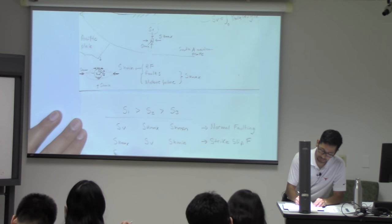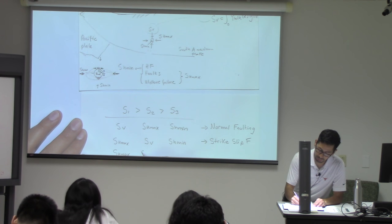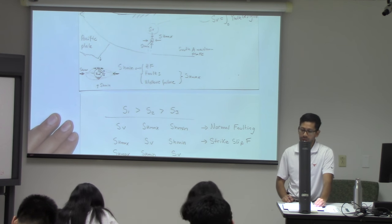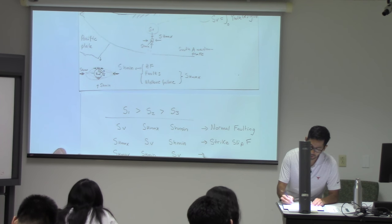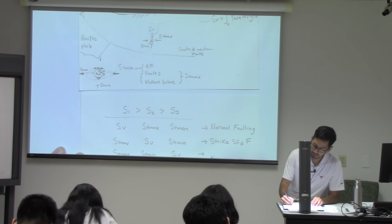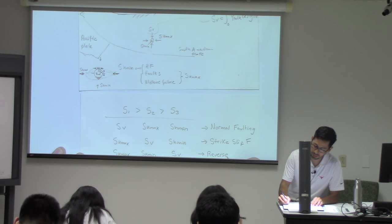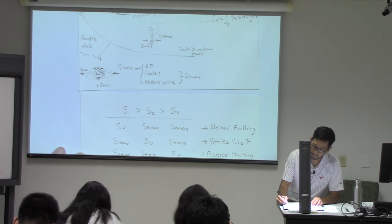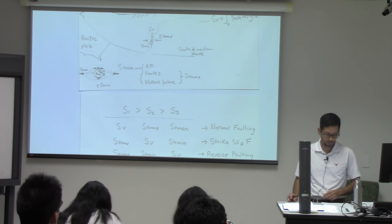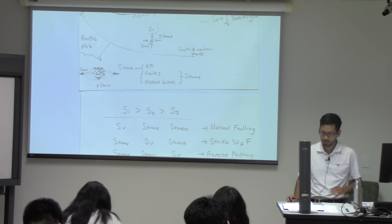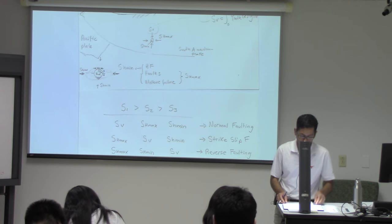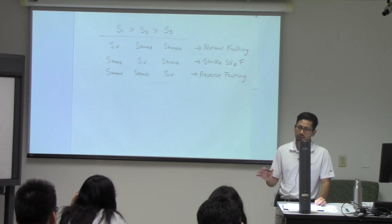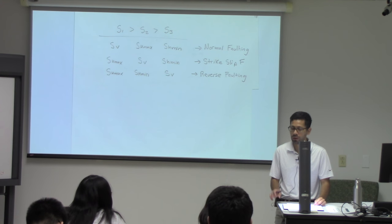'Strike-slip' means that the faults move along the strike, which is a line parallel to the intersection between the fault and a horizontal plane. The third case is going to be a case in which both horizontal stresses are higher than the vertical stress — and this is a case called reverse faulting, or what some people call thrust faulting.